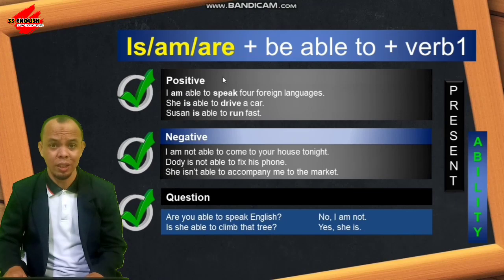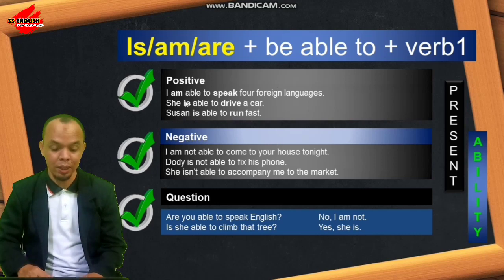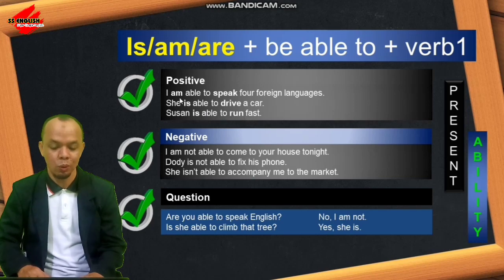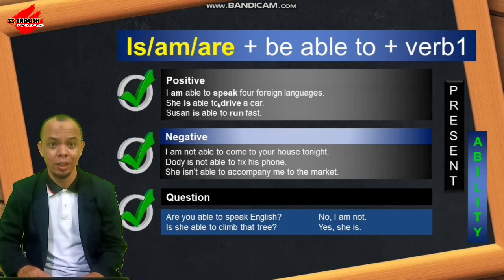Selain 'can', kita juga bisa menggunakan is/am/are plus 'be able to' plus kata kerja infinitive. Contoh kalimat positif: 'I'm able to speak four foreign languages.' / 'She's able to drive a car.' / 'Susan is able to run fast.' To be yang dipakai disesuaikan dengan subjeknya. Kalau belum mengerti penggunaan is/am/are, bisa lihat video saya sebelumnya.